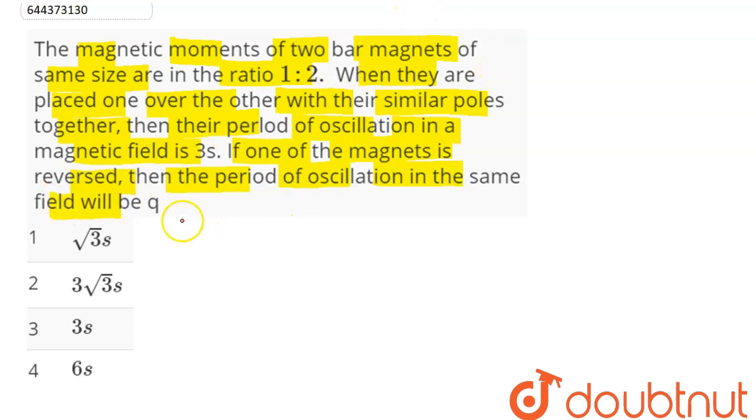So we can see here, time period of a magnetic dipole is given as 2π root under I divided by m into B. Now here we can say time period is inversely proportional to square root of net magnetic moment. So we can say here T1 by T2 will be equal to square root of M2 divided by M1.